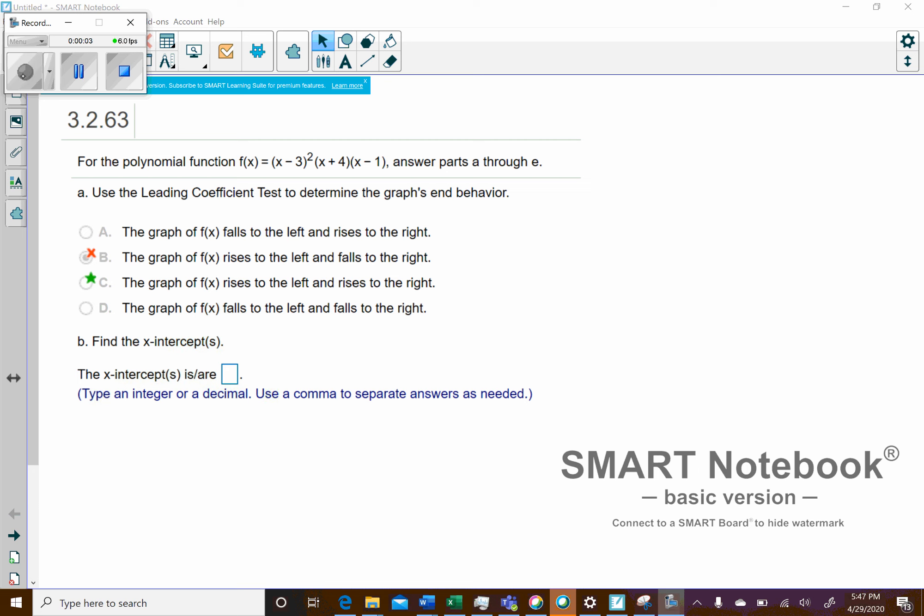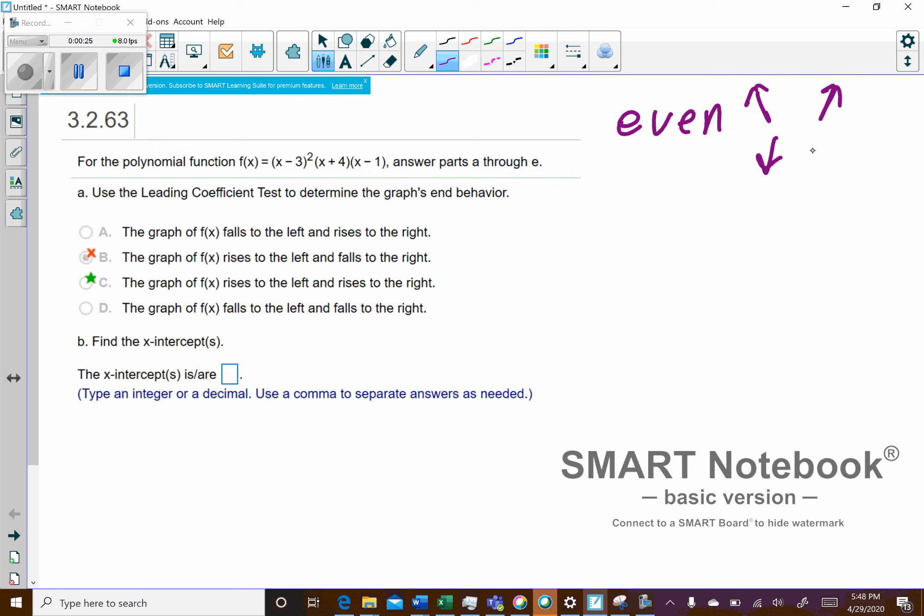Okay, so on these questions I was sent right here. The first thing is doing the leading coefficient test about the end behavior. If you have an even power, then they're both either going to go up in both directions or down in both directions, right, or rise and fall.